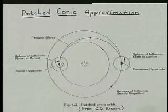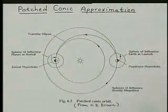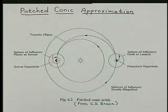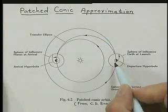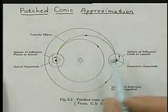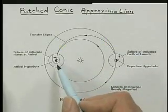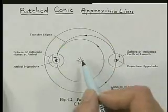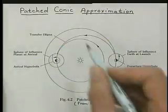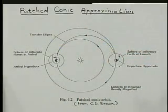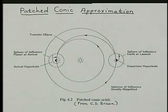Let's talk about the patched conic approximation in getting a spacecraft from one planet to another. If we think about the problem in general — if we're launching from the Earth and, in this example from Charles Brown's book, we're going to Venus — we have three gravitating bodies: the Earth, the Sun, and Venus. And then we have the spacecraft, a fourth body. So in celestial mechanics, this is called a four-body problem, and that's a very complicated problem to have the gravity of three planets affecting the spacecraft.